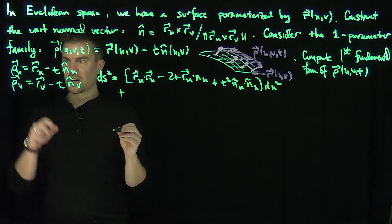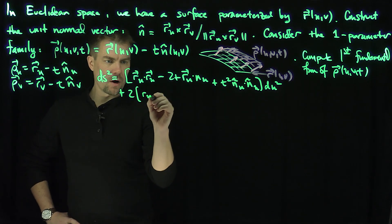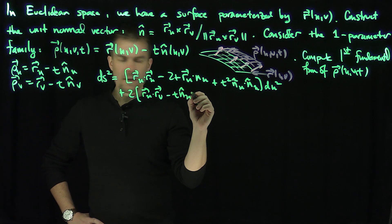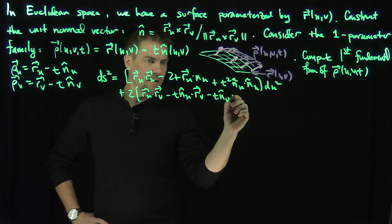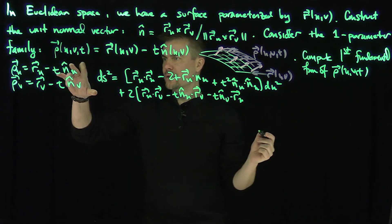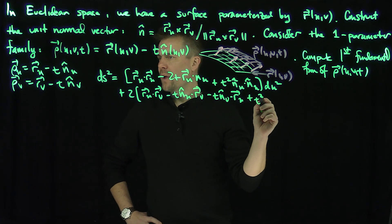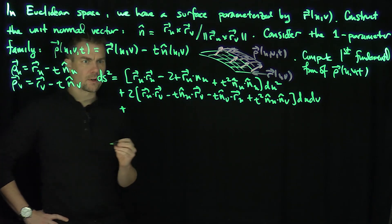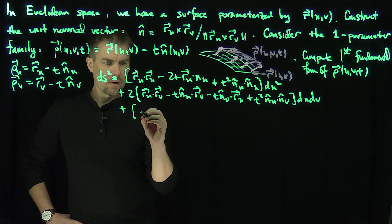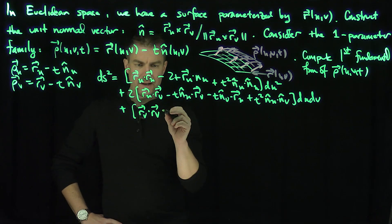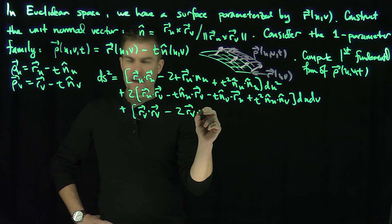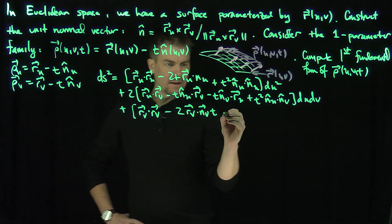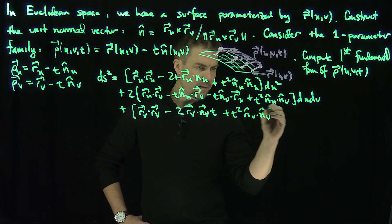Then the du dv cross terms: we'll have r_u dot r_v, minus t times n_u dot r_v, minus t times n_v dot r_u, plus t squared times n_u dot n_v. And the dv squared terms: r_v dot r_v, minus two t times r_v dot n_v, plus t squared times n-hat_v dot n-hat_v times dv squared.